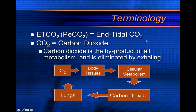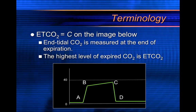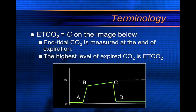Carbon dioxide is the byproduct of all metabolism and is eliminated by exhaling — it's like your exhaust, the byproduct of combustion in the body, or metabolism. Oxygen goes to your body tissues, cellular metabolism takes place, carbon dioxide is produced and taken to the lungs — that's where we get our reading — and then you get oxygen back in the lungs and the process continues. End tidal CO2 equals C on the waveform image. At the peak value of the plateau is your end tidal CO2 — at the end of the tidal volume you're exhaling, because what you exhale is your tidal volume, and at the end of that tidal volume is the number you're getting. The highest level of expired CO2 is your end tidal CO2.